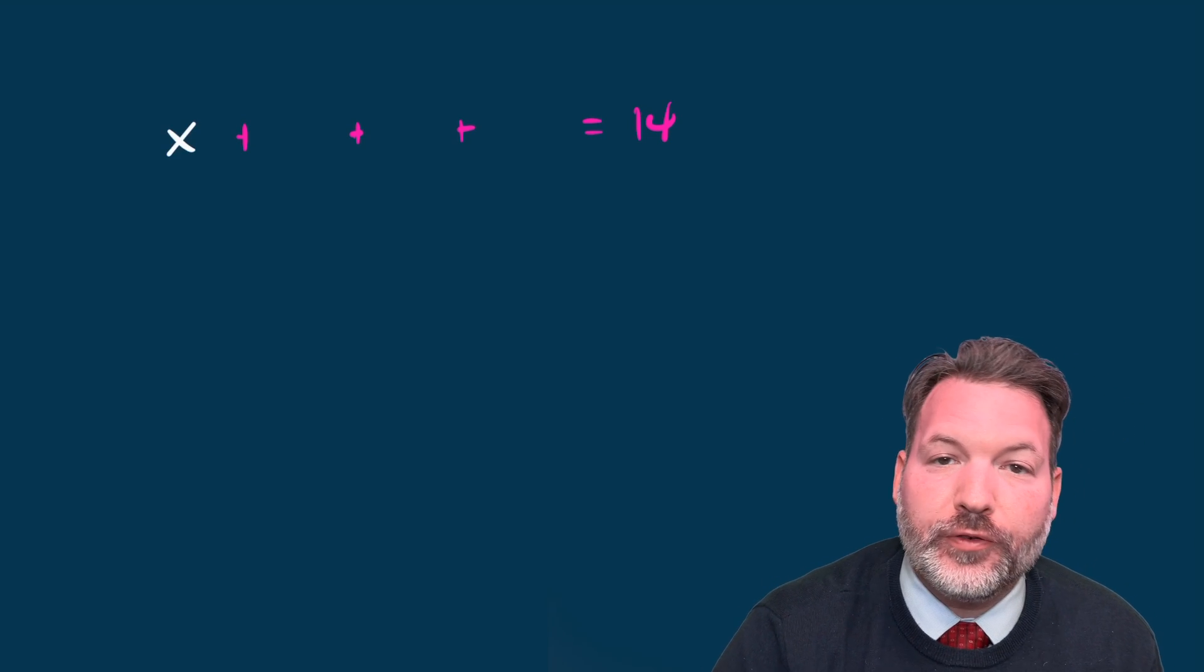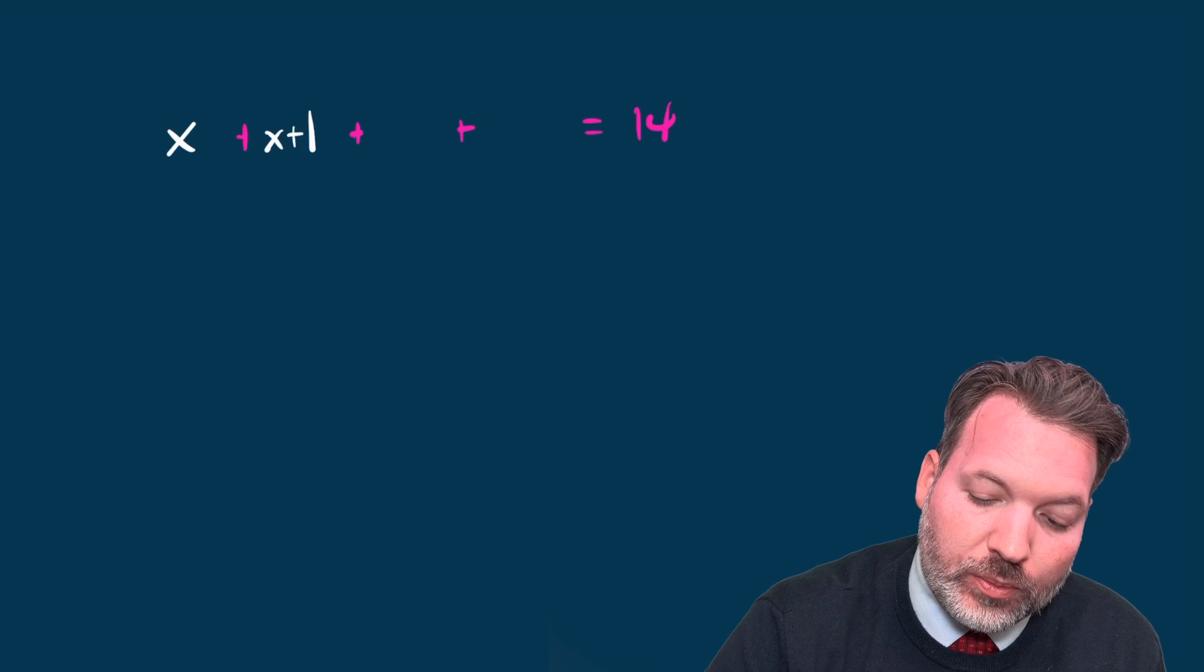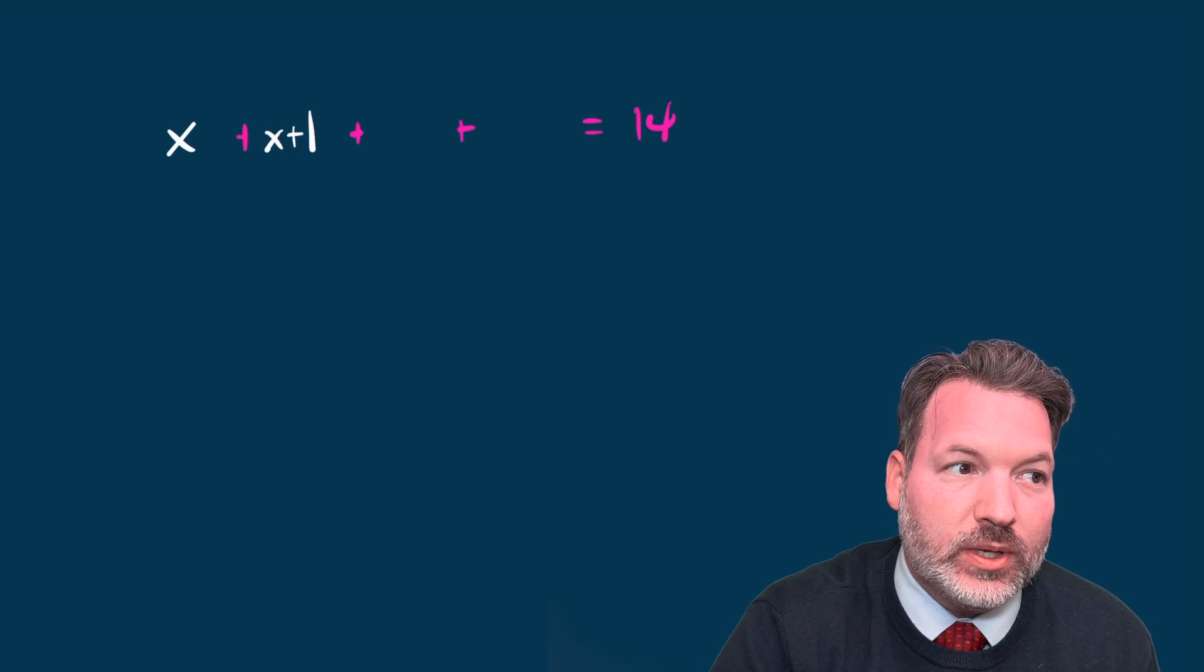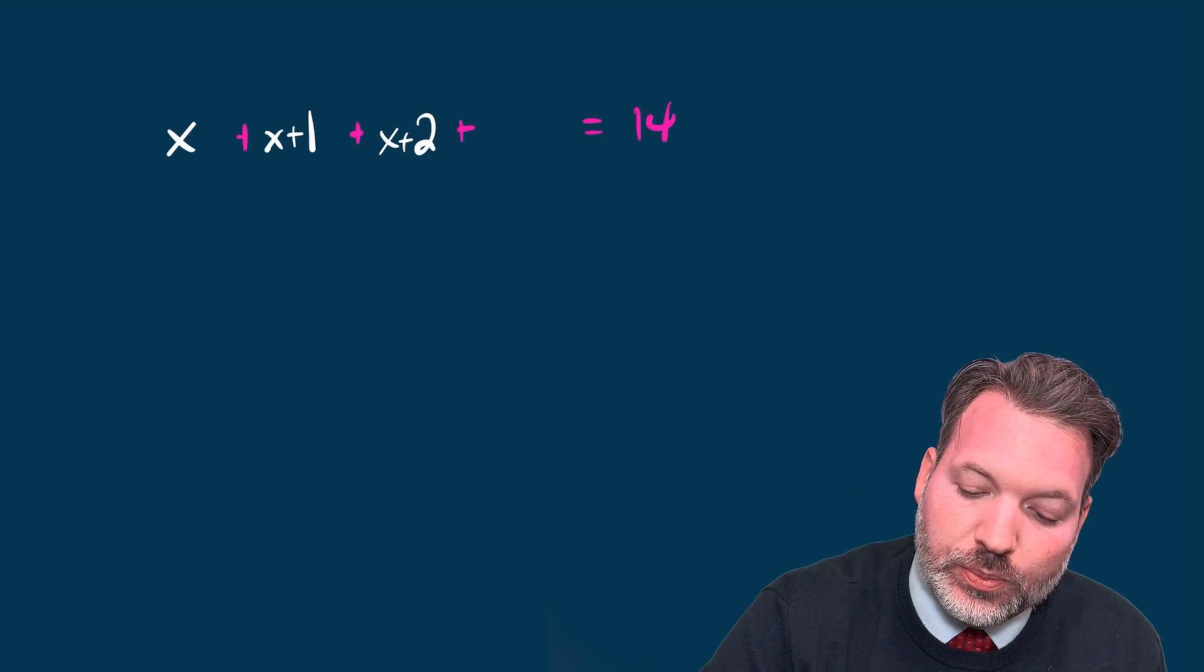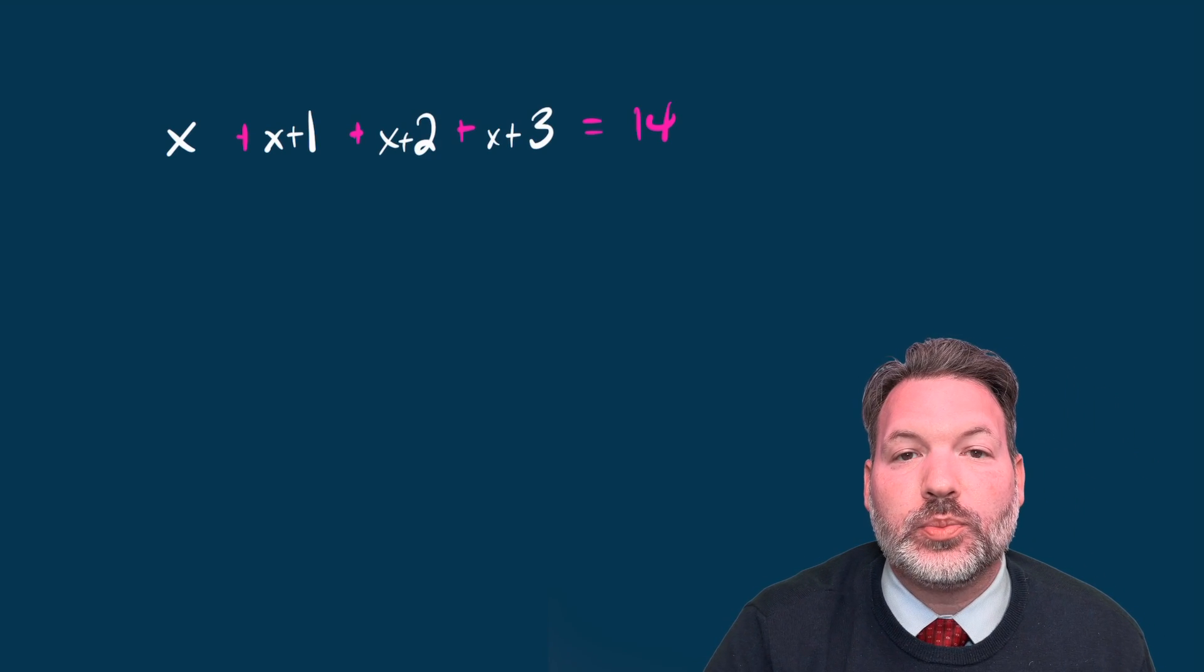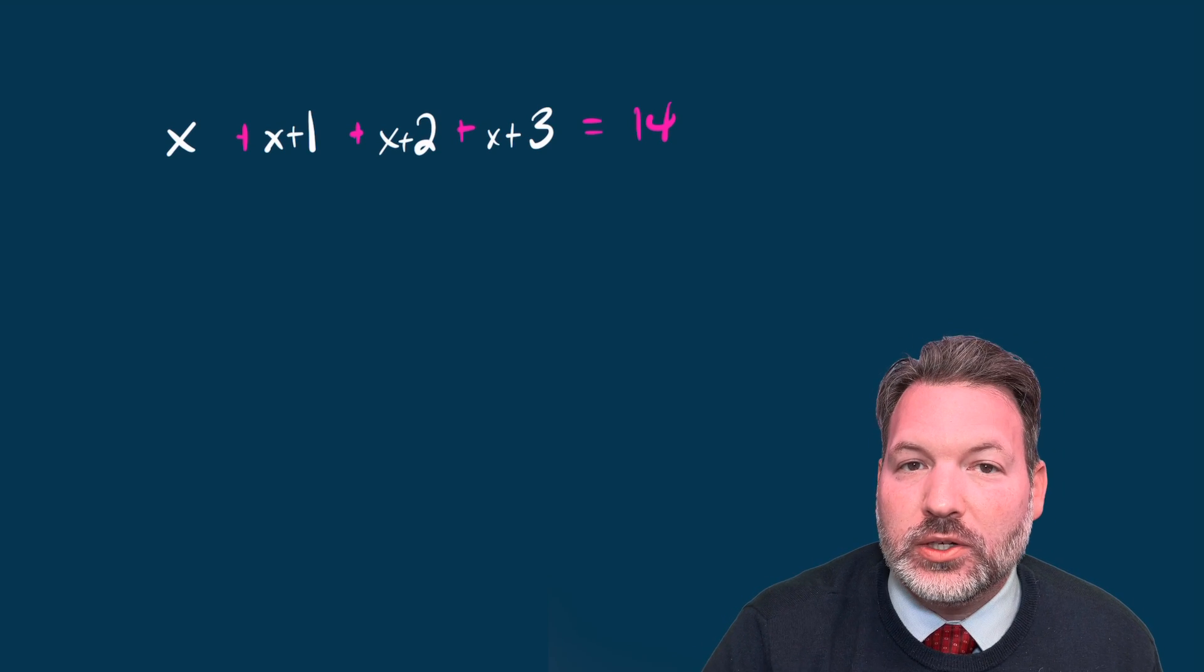I could do it by calling the first of these consecutive integers x, and then the next one after that would be x plus one, because it's just going to be the same as what was before, but one bigger. And then the one after that would be x plus two, and the one after that, x plus three. These sums of consecutive integers have a bunch of interesting properties.